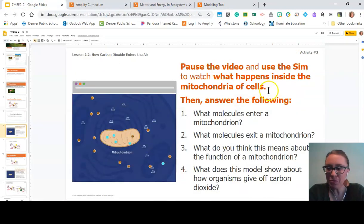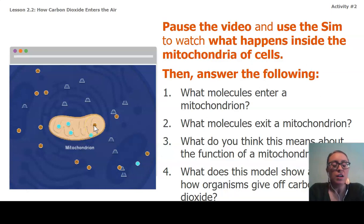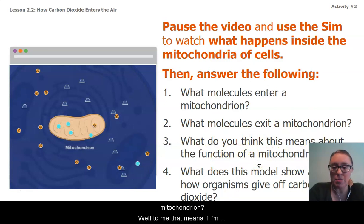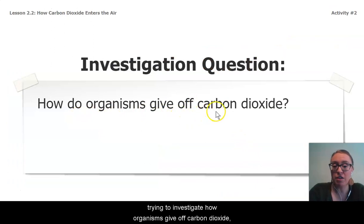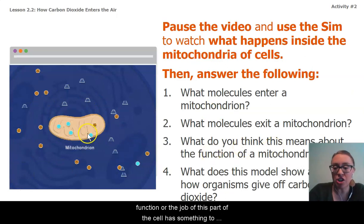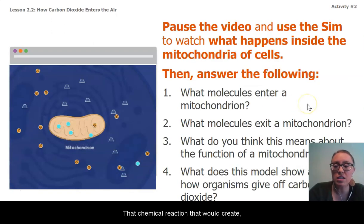If I go back and consider what I was to be observing here, I noticed what's entering the mitochondrion is oxygen and energy storage molecules. And that was true for all of the mitochondria that we looked at within all of the different types of biotic components of our ecosystem. What's exiting for all of those was water and carbon dioxide. So what do you think this means about the function of mitochondrion? Well, if I'm trying to investigate how organisms give off carbon dioxide and I just observed a mitochondrion giving off carbon dioxide, that means the function or the job of this part of the cell has something to do with that chemical reaction that would create or rearrange molecules to make carbon dioxide.